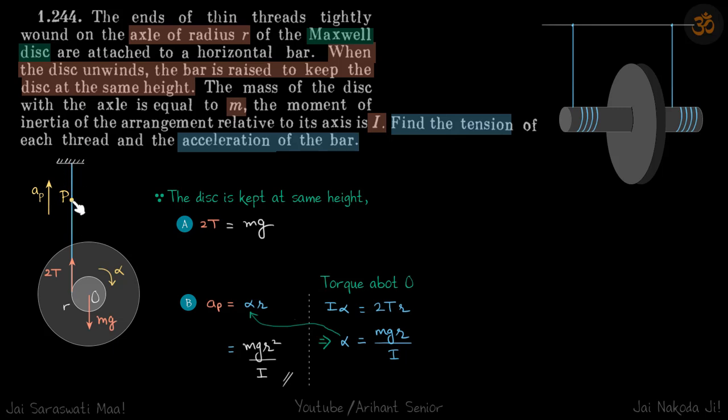Now we need to calculate the acceleration of the bar. That is the same as acceleration of this point P—that is the acceleration of the thread. So the thread is moving up with an acceleration ap, which we want to know, and the disc is at rest but rotating with angular acceleration alpha.